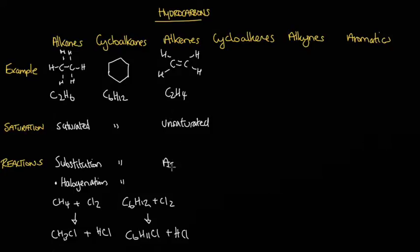Alkenes undergo addition reactions, not substitution, including halogenation, which is the addition of chlorine or any other halogen across that double bond. When chlorine attaches to that double bond, we end up with a chlorine here and a chlorine here while that double bond breaks, so we end up with C2H4Cl2.